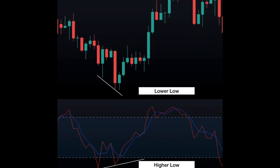A bullish divergence occurs when the price shows a lower low, but the stochastic showing a higher low.